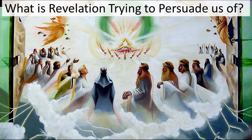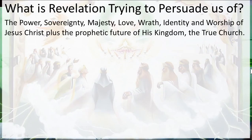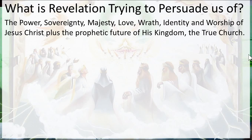So what is the book of Revelation trying to persuade us of? It's trying to persuade us about the power, the sovereignty, the majesty, the love, the wrath, identity, and worship of Jesus Christ, plus the prophetic future of his kingdom, the true church. Those are seven things it's trying to demonstrate throughout the book. He's powerful, sovereign, majestic. His identity is Jesus Christ, the one God, and everybody falls down and worships him. And it's nice that he cares enough about us to give us the prophetic future of his kingdom so that we can understand when we see the signs approaching.